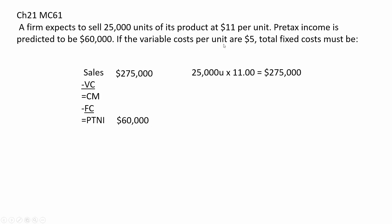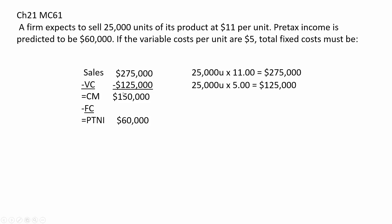Variable cost per unit is $5, and we are going to sell 25,000 units, so that's $125,000 to plug in for variable costs. So we can say sales minus variable cost equals contribution margin of $150,000. And contribution margin minus fixed cost equals pre-tax net income. The difference between these two is what we're looking for — total fixed cost.